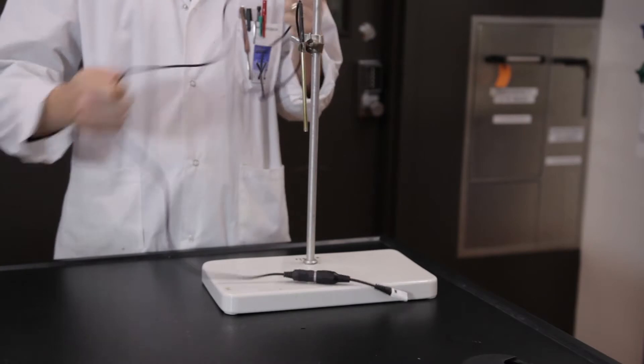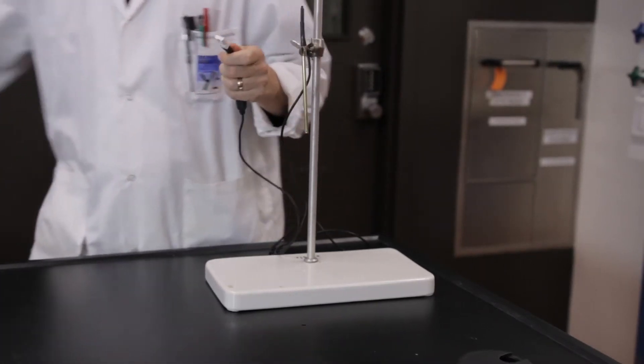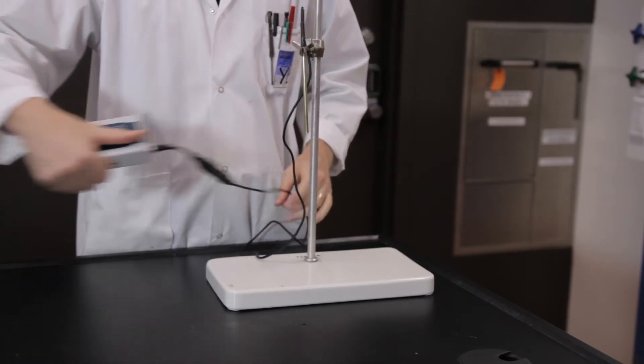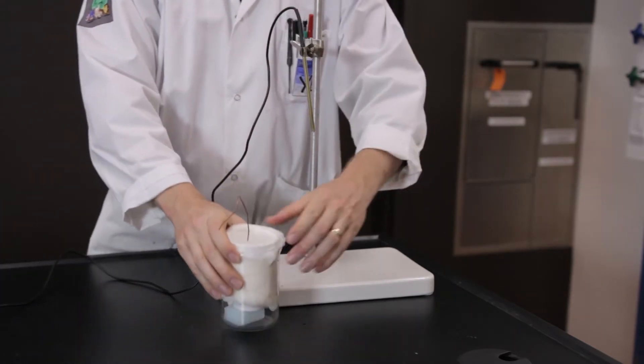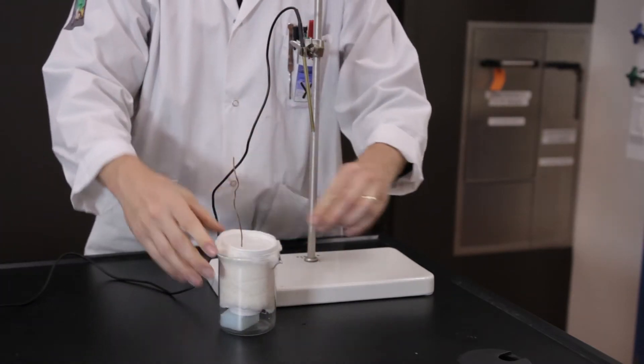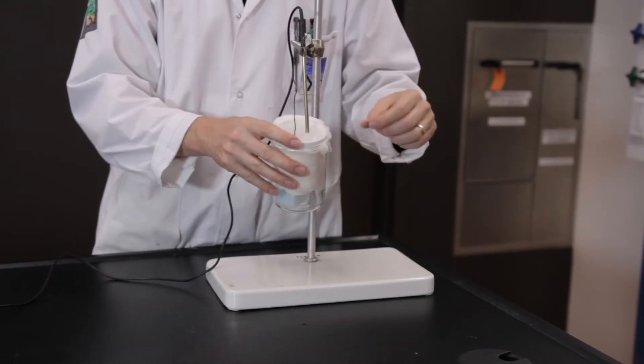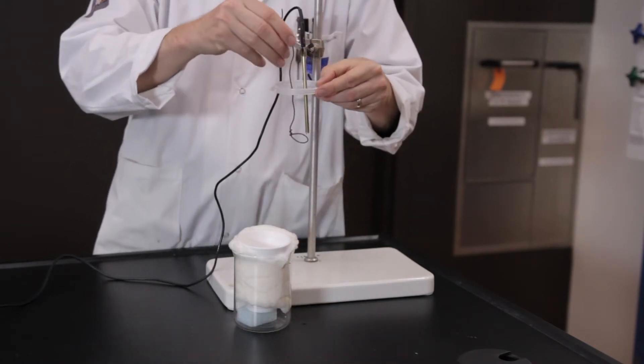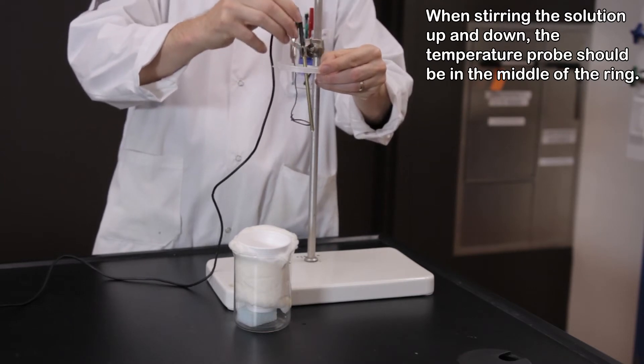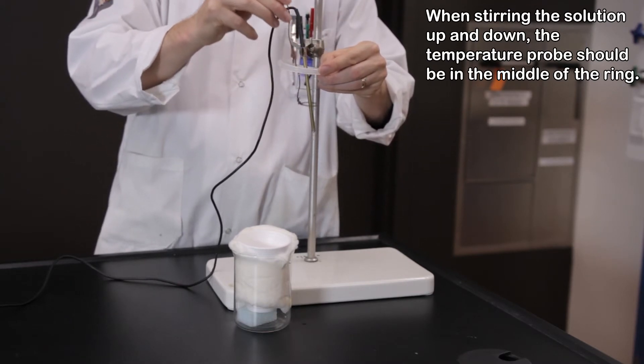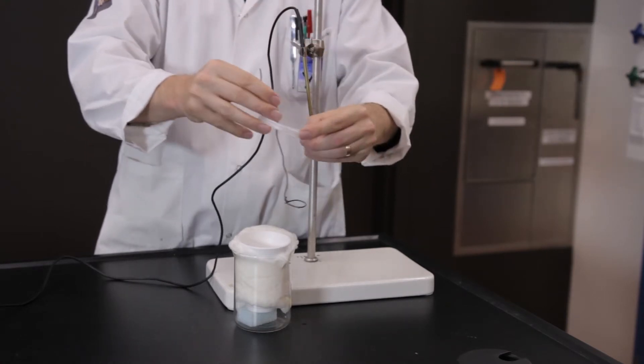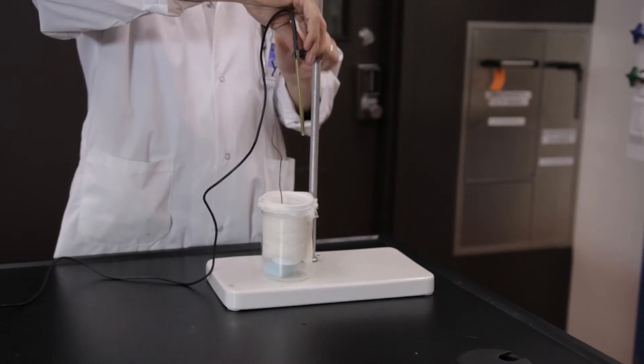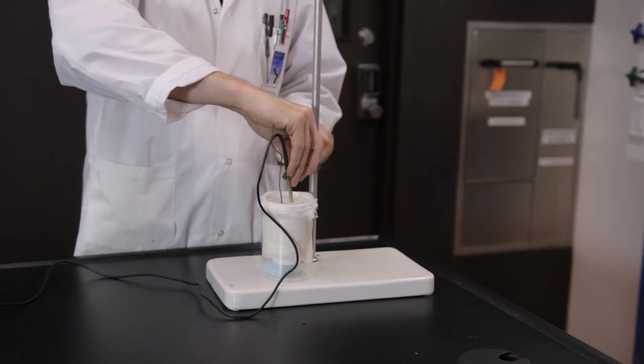Make sure the temperature sensor is connected. Pass the temperature probe through one of the holes in the cover of the calorimeter and make sure to immerse the tip of the probe in the water. Clamp the probe in place.